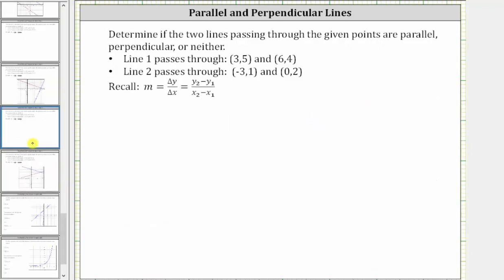The slope is equal to the change of y divided by the change of x. When we have two points on a line, we can determine the slope using the formula: the quantity y sub two minus y sub one, divided by the quantity x sub two minus x sub one.